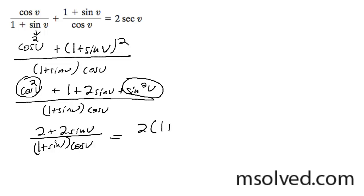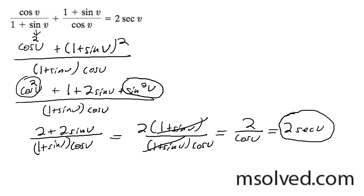2 times 1 plus sine v all over 1 plus sine v cosine v. And we get 2 over cosine v which further simplifies down into 2 secant v, which is the solution we're looking for.